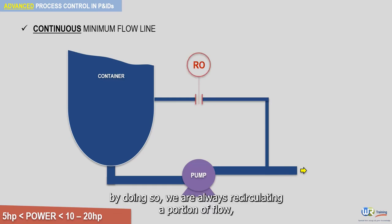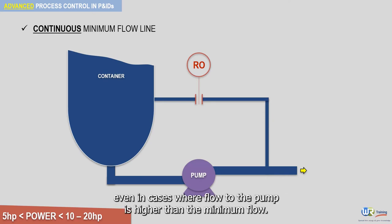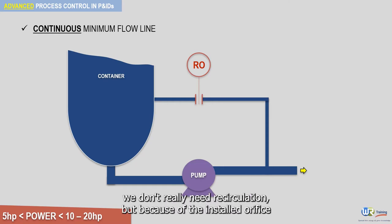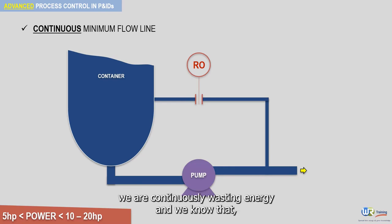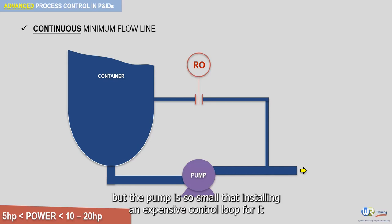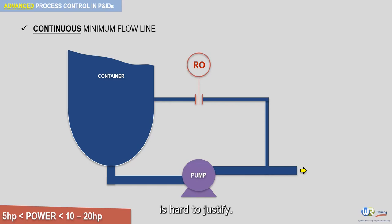By doing so, we are always recirculating a portion of flow, even in cases where flow to the pump is higher than the minimum flow. When the flow to the pump is higher than the minimum flow, we don't really need recirculation, but because of the installed orifice, we are continuously wasting energy. But the pump is so small that installing an expensive control loop for it is hard to justify.